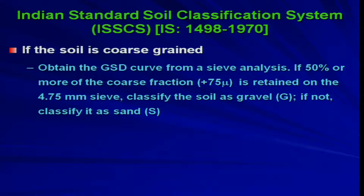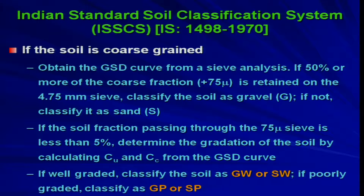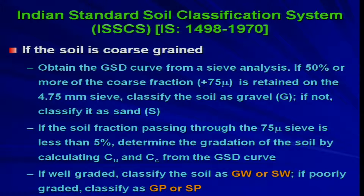If the soil is coarse-grained, obtain the GSD curve from a sieve analysis. If 50 percent or more of the coarse fraction (greater than 75 micron) is retained on the 4.75 mm sieve, classify the soil as gravel; if not, classify it as sand. If the fraction passing through the 75 micron sieve is less than 5 percent, determine the gradation by calculating Cu and Cc from the GSD curve. If well-graded, classify as GW or SW; if poorly-graded, classify as GP or SP.